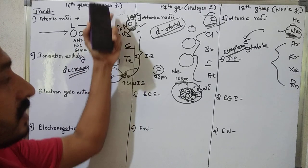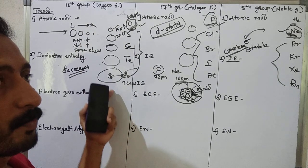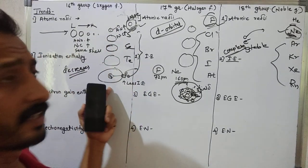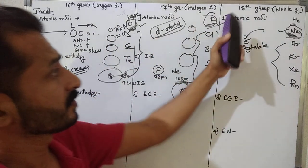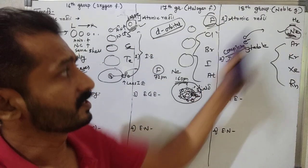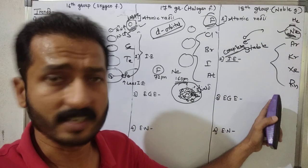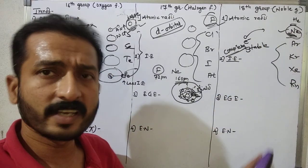So to summarize: ionization enthalpy from top to bottom overall decreases for the 16th, 17th, and 18th groups.